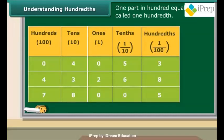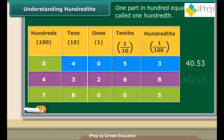Now concentrate on the table and let us read decimals from it. Look at the first row: 40 plus 5 tens plus 3 tenths plus 3 hundredths will make 40.53. Now focus on the second row: 4 hundreds plus 3 tens plus 2 ones plus 6 tenths and 8 hundredths will make 432.68. Now pay attention to the third row: 7 hundreds plus 8 tens plus 5 hundredths will make 780.05.